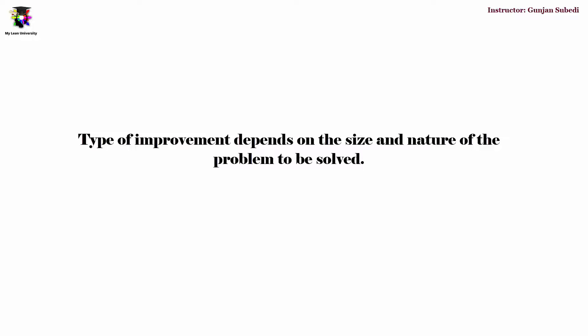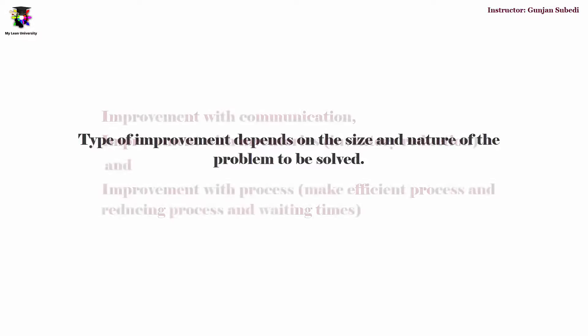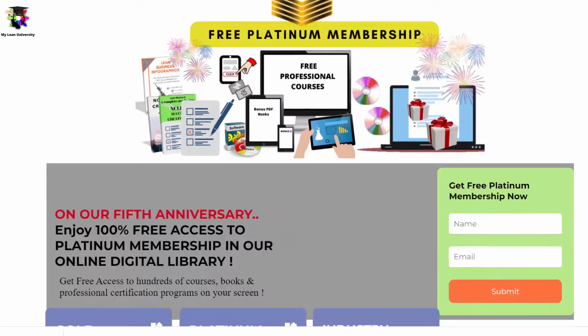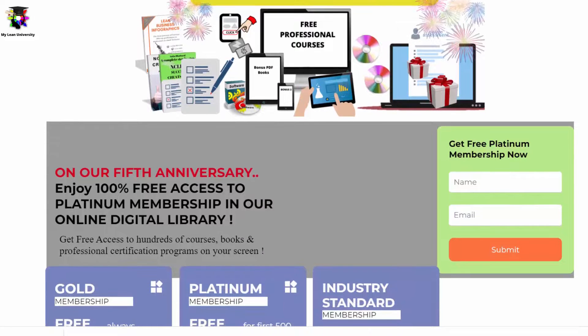But for all industries, our principal goal of improvement with a value stream map should be improvement in communication, improvement in inventories, and improvement in the process.